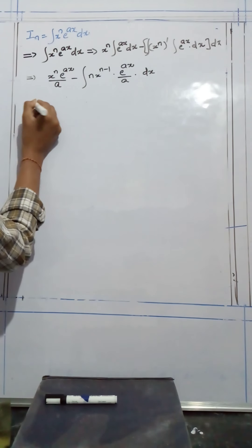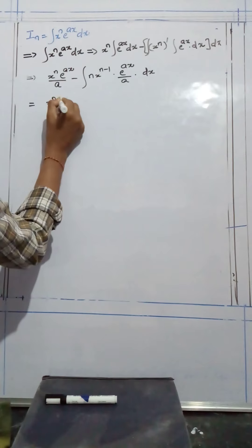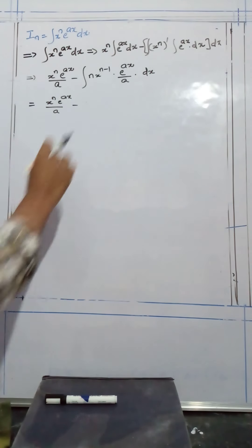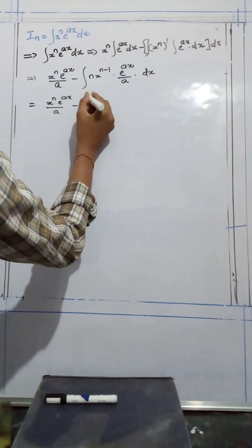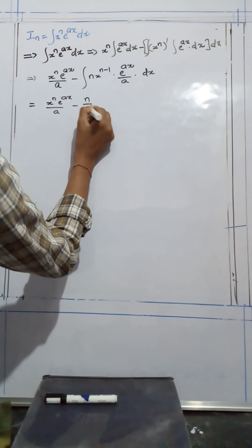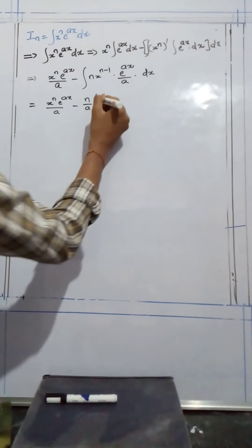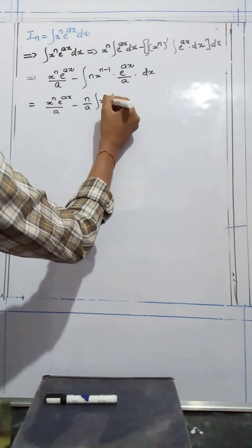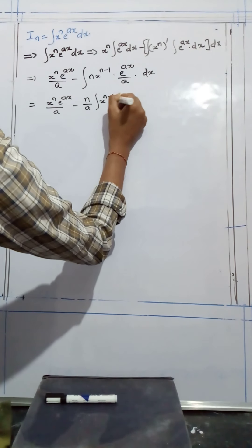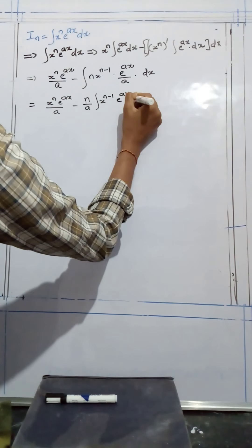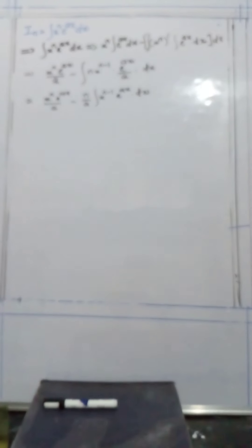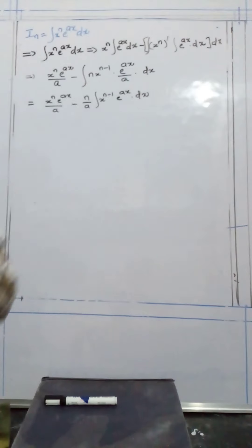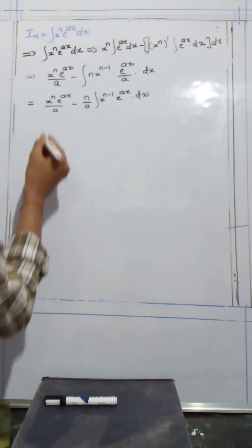That is equal to x to the power of n, e to the power of ax, divided by a, minus — the constants are n and a. Those two constants must be taken outside of the integral. Therefore, we are left with n by a, times the integral of x to the power of n minus 1, e to the power of ax, dx. Now, see here — n means we are writing I_n, so here we need to write I_{n-1}.